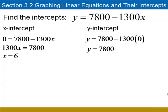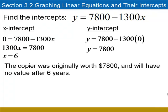And here's the interpretation of these two values. The y-intercept tells us that the copier was originally worth $7,800 because the time x was 0. And the x-intercept, 6, tells us that the copier will have no value after 6 years because its y-value, the value of the copier, will be 0 at that point.